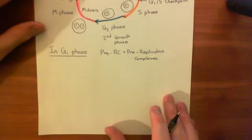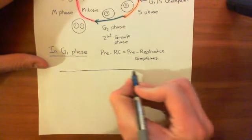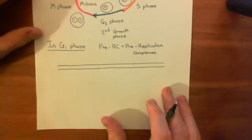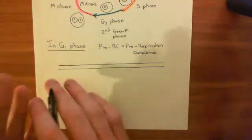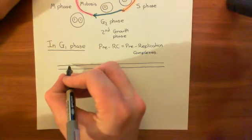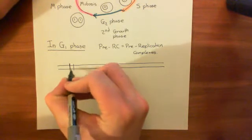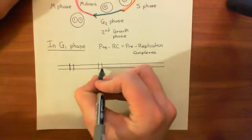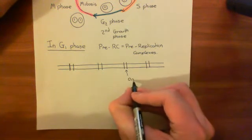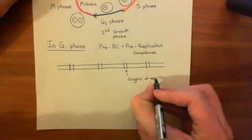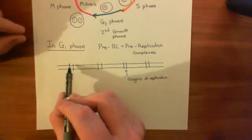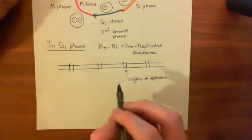So what is a pre-replication complex? If I draw out a piece of DNA - represented by two lines for the two complementary strands - let's say this is a huge linear piece of DNA representing an entire chromosome. The way DNA is replicated is that along this chromosome, you will have many different origins of replication - many different sites along this chromosome where DNA replication can be started. These sites are known as origins of replication.